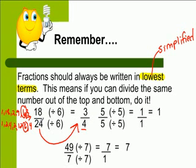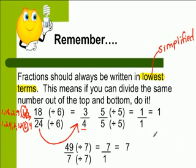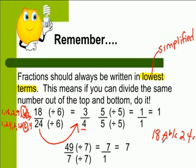If you divide 6 into both numbers: 18 divided by 6 is 3, and 24 divided by 6 is 4. So 18 over 24 is the same as 3 fourths, and 3 fourths is the simplified fraction. Remember that all fractions need to be simplified as far as they can go. Your calculator can do that for you. On the new red OGT calculator, type in 18, then the A B/C button, then 24, then equals, and it should simplify to the lowest term.